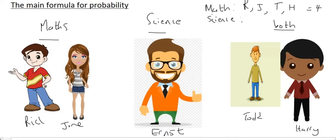The person then asks how many people do science. So Ernest will stand up and Todd and Harry would stand up again because they also do science. They do both maths and science. And so that would be three people.